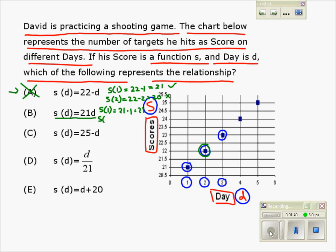However, for day 2, when the value of D is 2, according to this relationship, S will be 21 times 2, which is 42. But 42 is not right. We should have gotten 22, as shown in the chart. So this is not okay, and thus we reject option B as well.